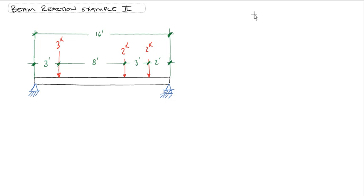So the first thing we want to do is draw a free body diagram. So we're going to place the two supports with their proper reactions. For instance, the left side is a pin.